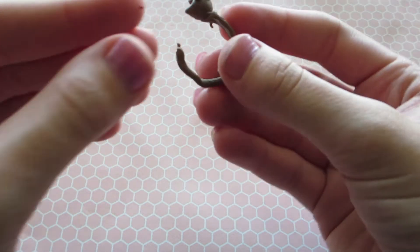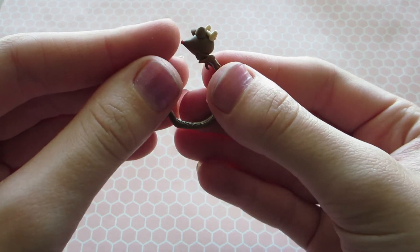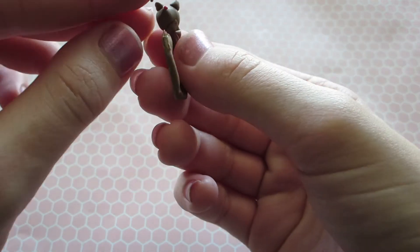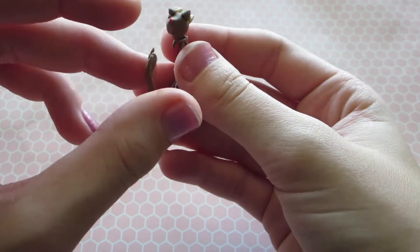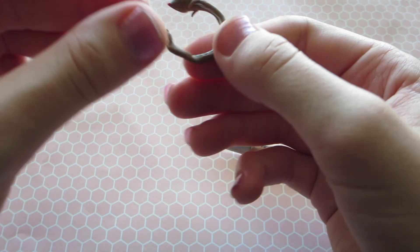Take a tiny little ball of red clay and attach to the head to make a little Rudolph nose. Take two little balls of black clay and attach onto the face for the eyes.